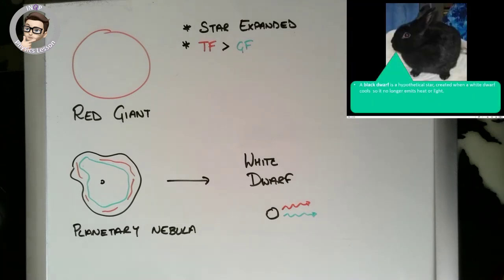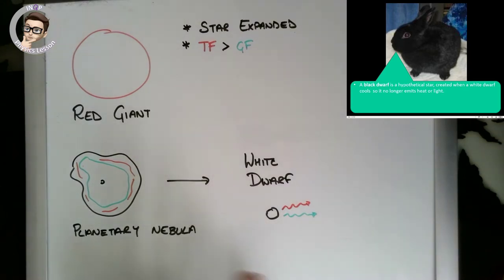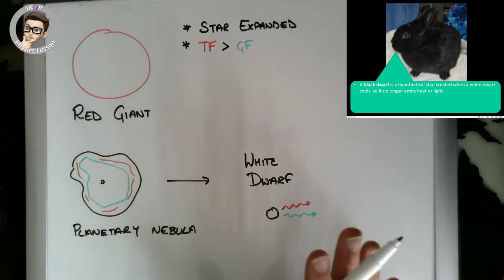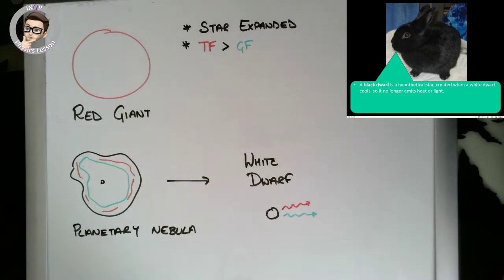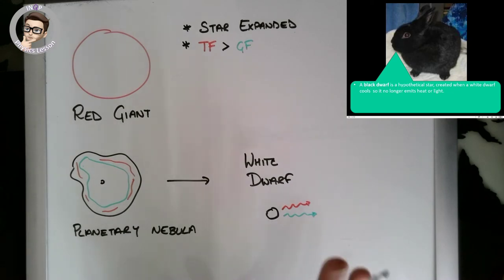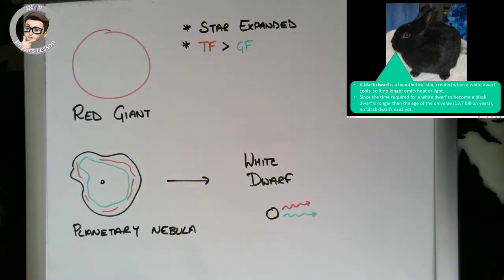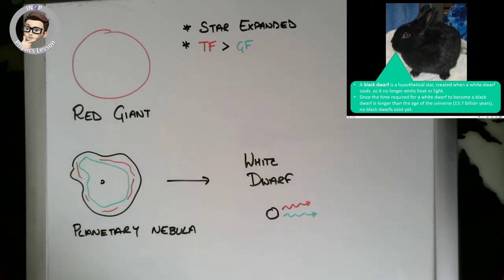That's the end of the story for stars our size. We could potentially have something called a black dwarf in the future — these are hypothetical stars because we've never seen one. It's where a white dwarf has cooled down, but it would actually take longer than the current age of the universe for a white dwarf to cool and become a black dwarf, so we haven't seen any yet.